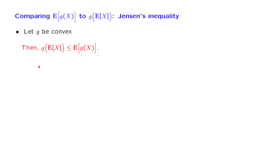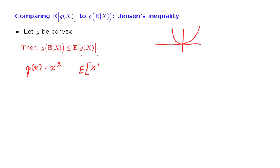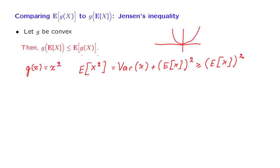Let us apply Jensen's inequality to some examples. Consider the function g(x) = x squared, which is clearly convex — it has this kind of upward-curving shape, and its second derivative is positive. Jensen's inequality tells us something about the expected value of x squared. We already know that E[x²] equals the variance of x plus the square of the expected value. Since the variance is always non-negative, we obtain E[x²] ≥ (E[x])², which is consistent with Jensen's inequality.